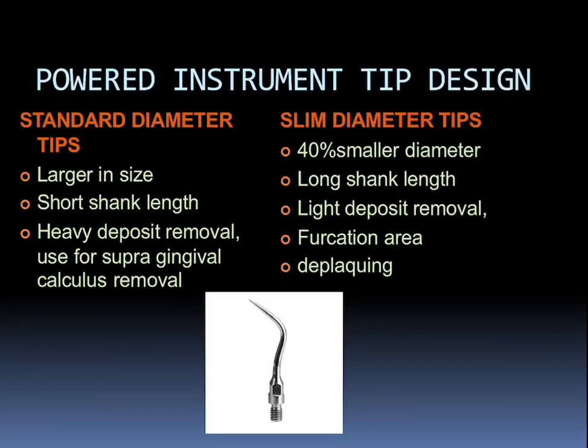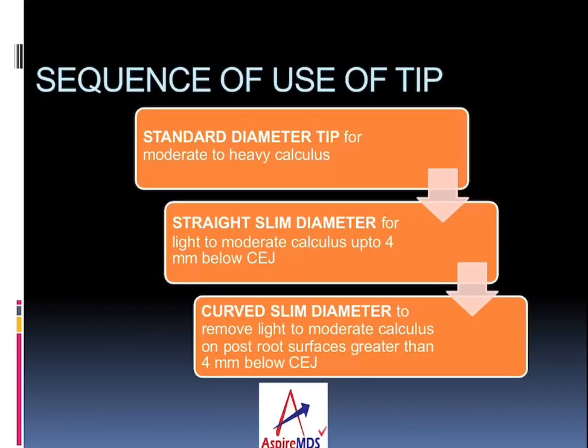The powered instrument tip design: standard diameter tips are larger in size with a shorter shank length and remove heavy deposits. Smaller tips are 40 percent smaller in diameter than the normal ones, have a longer shank length, remove lighter deposits of calculus, and are mainly used in furcation areas and for deplaquing. The sequence of tip use: standard diameter tip for moderate to heavy calculus; straight slim diameter for light to moderate calculus up to 4 mm below the CEJ; and curved slim diameter to remove light to moderate calculus on posterior root surfaces greater than 4 mm below the CEJ.